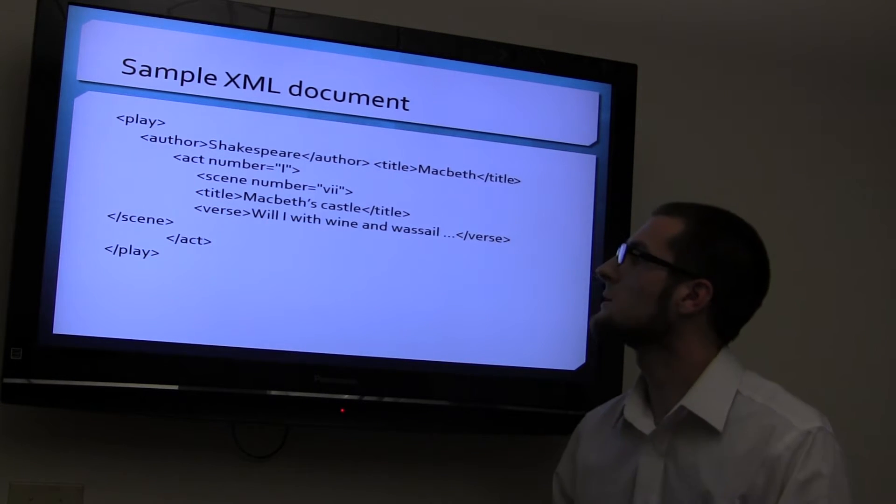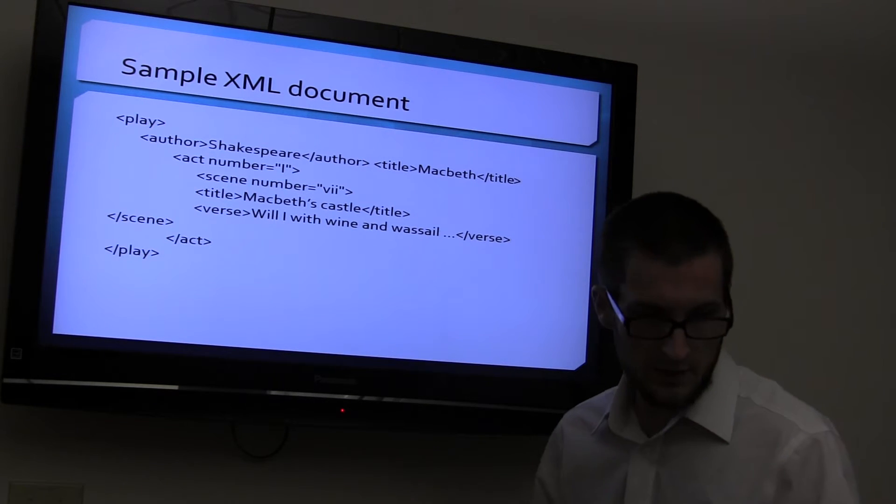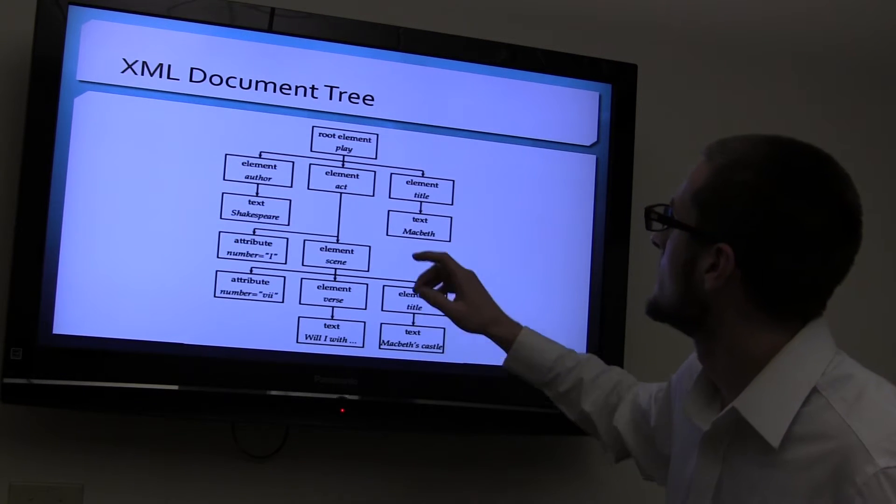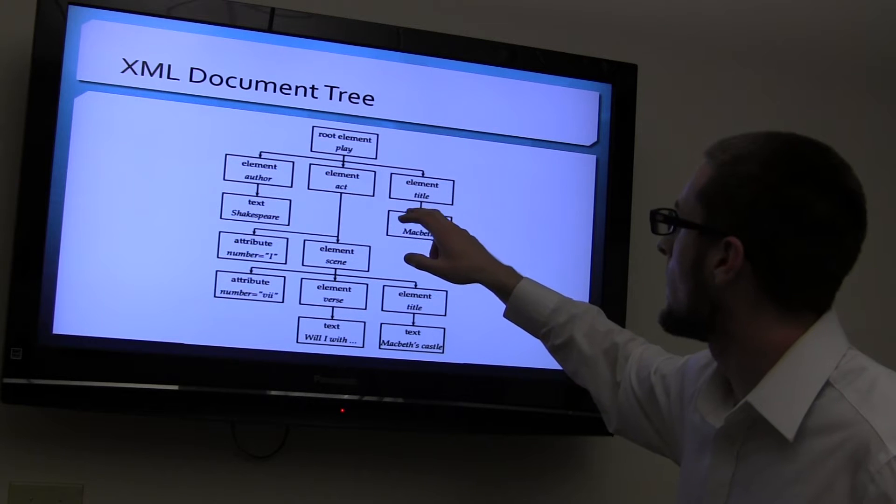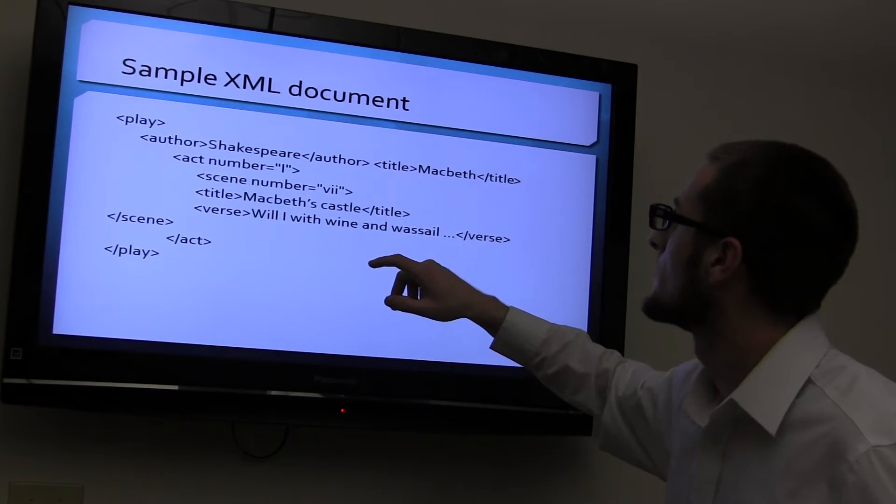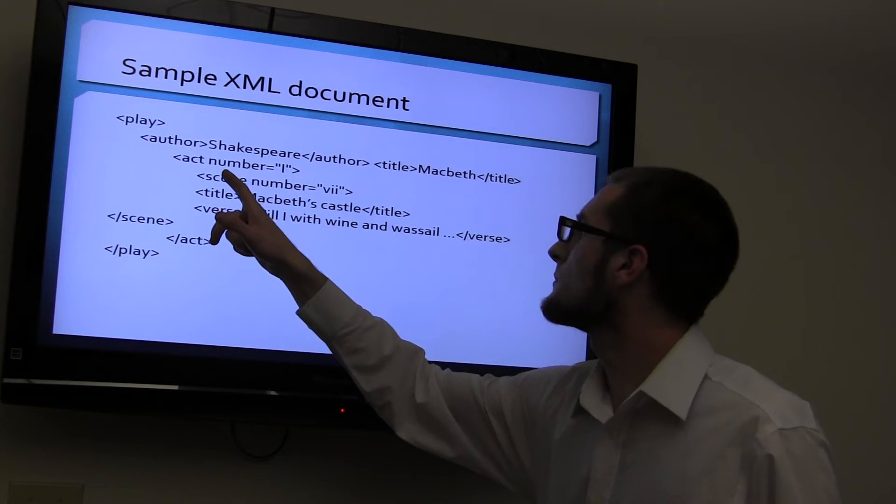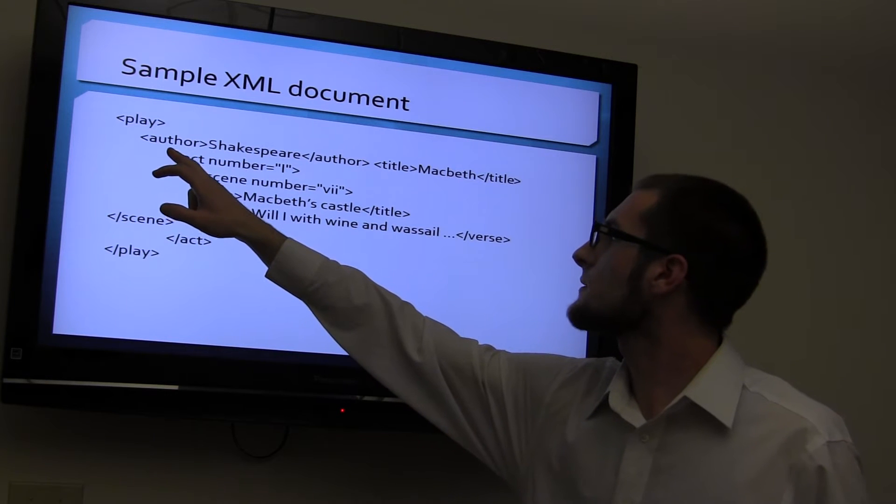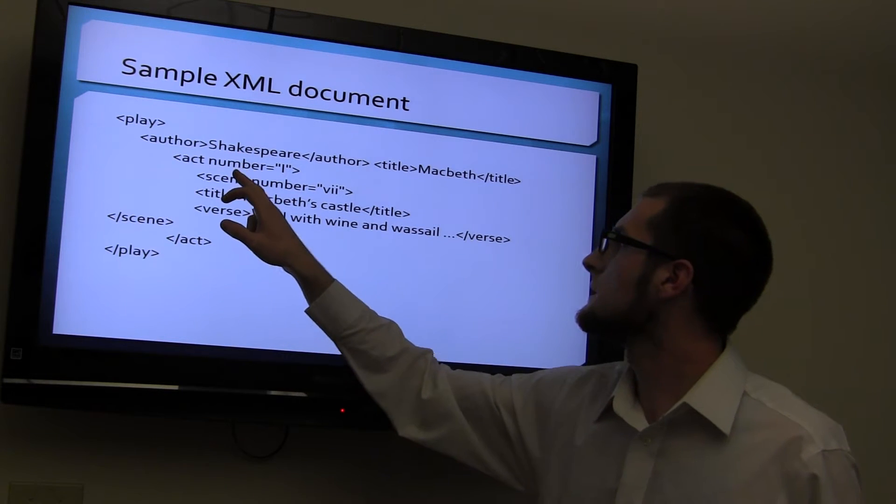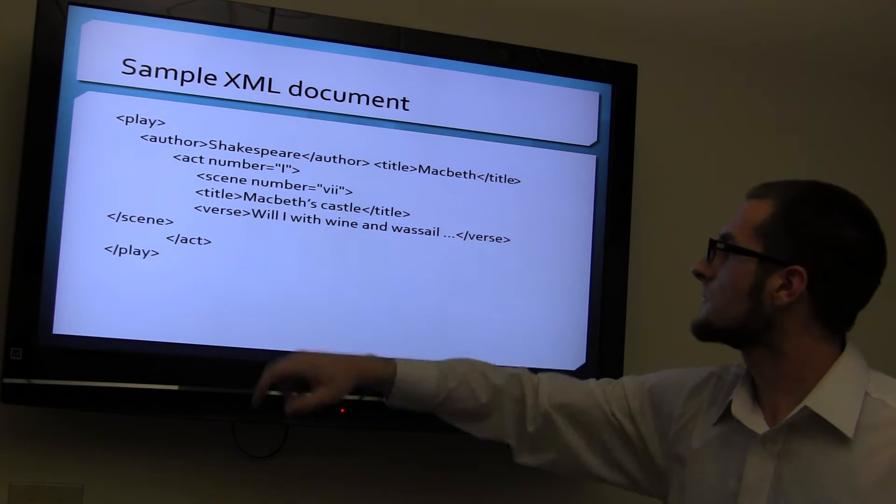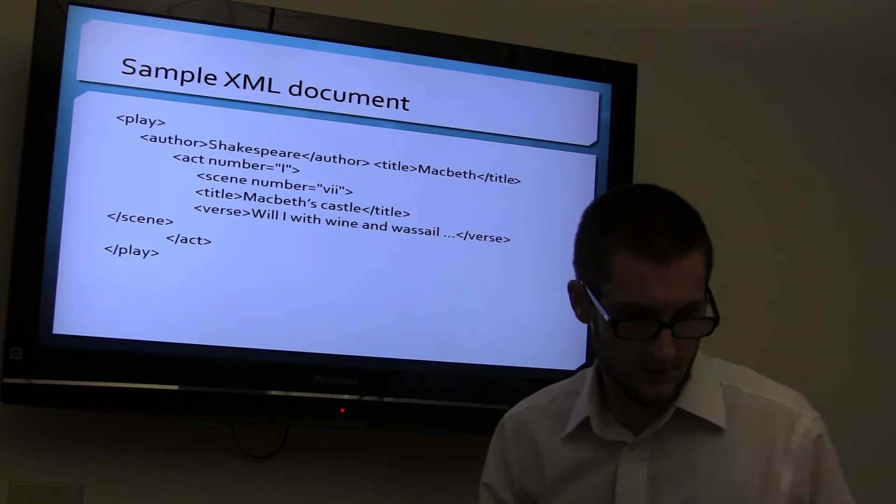And this is actually what the document will look like. So, going back to this slide quickly, you'll see how this information is all incorporated into this. The author, the act number, which is the author, in this case, is the element. This is the attribute. That's another attribute, and it goes down the line.